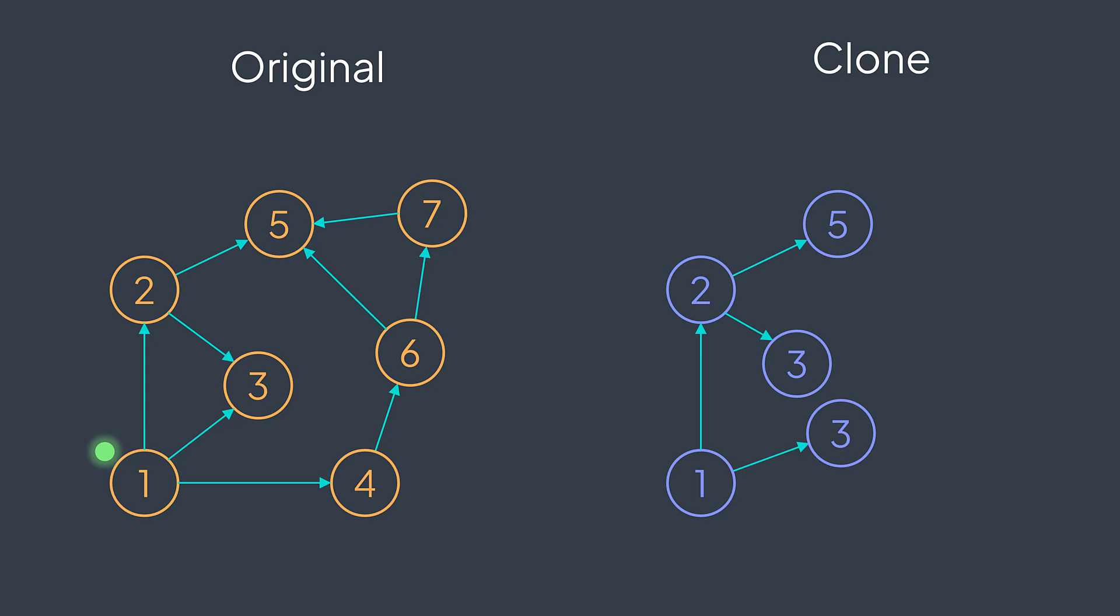But wait, what do we notice? We can notice that unlike in the original graph, one and two aren't pointing to the same node. Even if the two nodes have the same value, they don't have the same reference. So the one that is in neighbors of one is different from the one that is in neighbors of two.